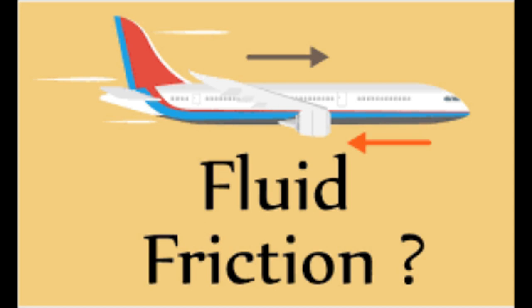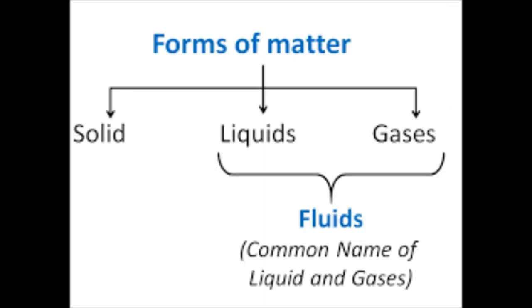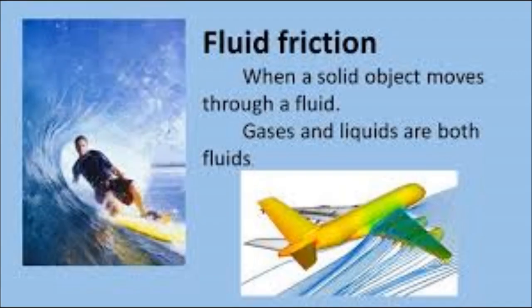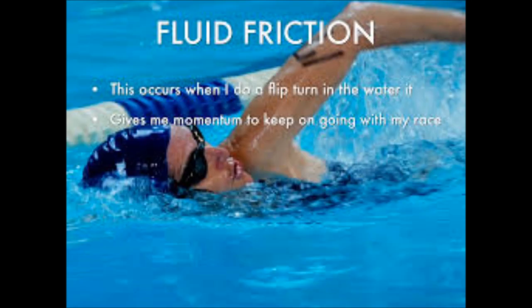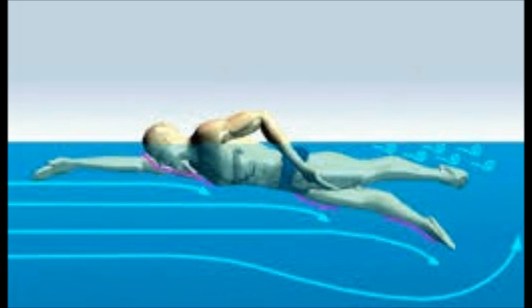From the ongoing discussion, we can conclude that air and water exert force of friction on objects moving through them. Since air and water are fluids, fluids exert force of friction on objects moving through them. The frictional force exerted by a fluid — air or water — is called drag or drag force. Drag is a kind of frictional force which opposes the motion of an object through a fluid, acting in a direction opposite to the direction of motion. Drag slows down the object and makes speeding up harder.